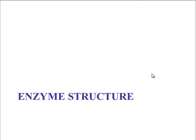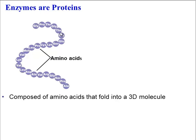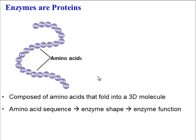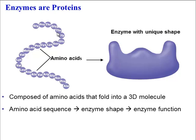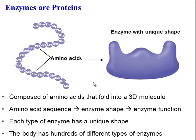The first thing to know about enzymes is that they are a type of protein, which means that they are made up of amino acids. That's important because the sequence of the amino acids will determine their three-dimensional shape. So because this particular enzyme has this particular order of amino acids, it folds up into a molecule with this shape, and that shape gives it its job. Each type of enzyme has a unique shape, and your body has hundreds of different types of enzymes.